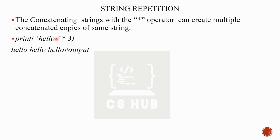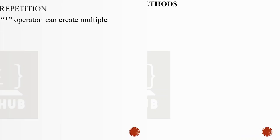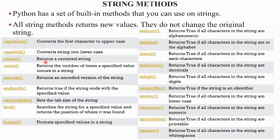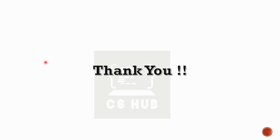For string repetition, we use the star operator. For example, a string 'hello' multiplied by star 3 will print 'hello' three times — multiple copies of the same string. This is the string repetition operator. So we have shown how to use string concepts, and next we will show how to use lists and classes. Thank you.